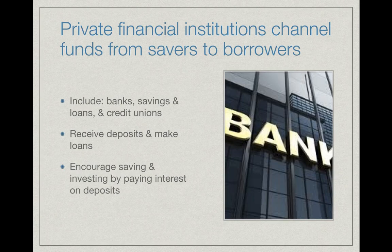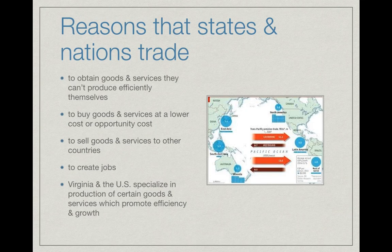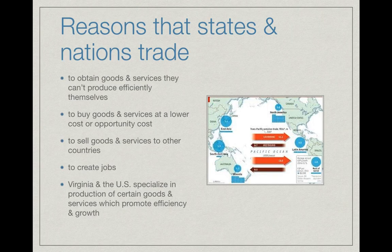Financial institutions receive deposits of money, make loans to people, and encourage saving and investing by paying interest on deposits. Virginia and the U.S. pursue international trade in order to increase wealth. The global economy is the worldwide market in which the buying and selling of goods and services by all nations takes place. Countries trade internationally to obtain goods and services they can't produce efficiently themselves, buy goods and services at a lower cost, sell goods to create jobs, and specialize in production to promote efficiency and growth.